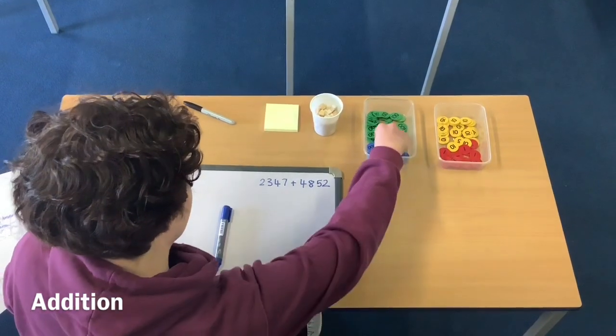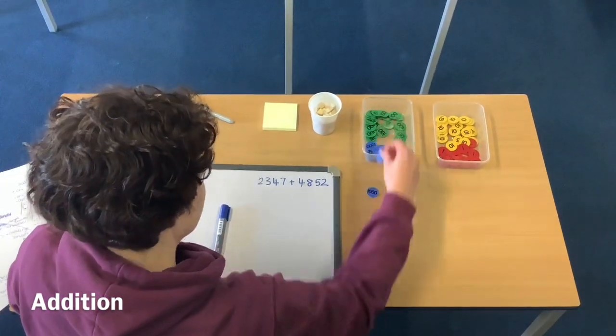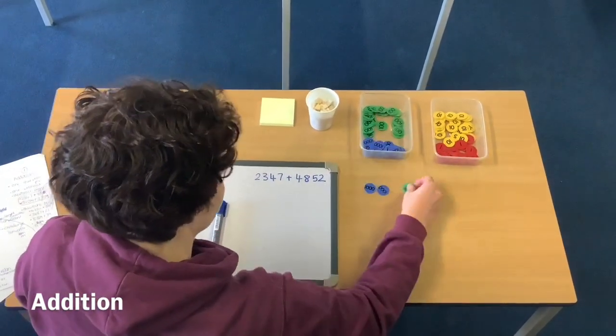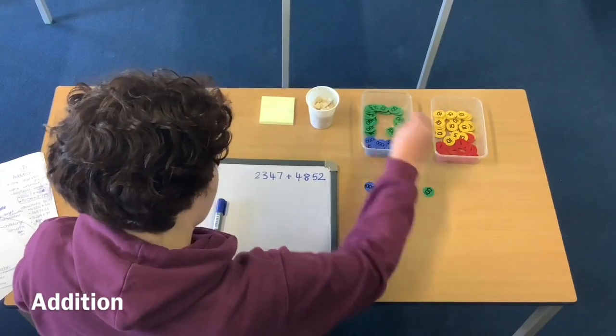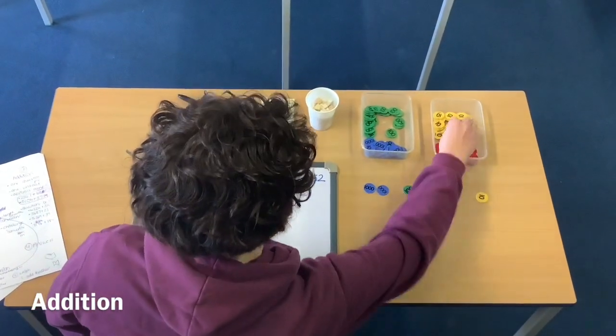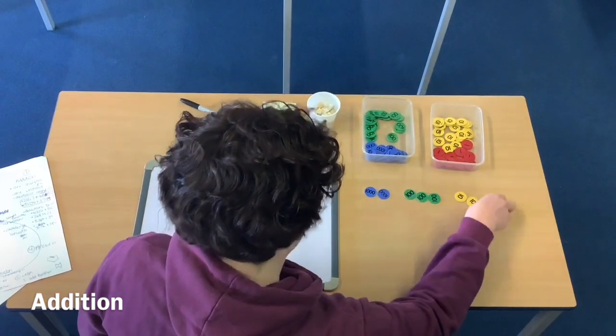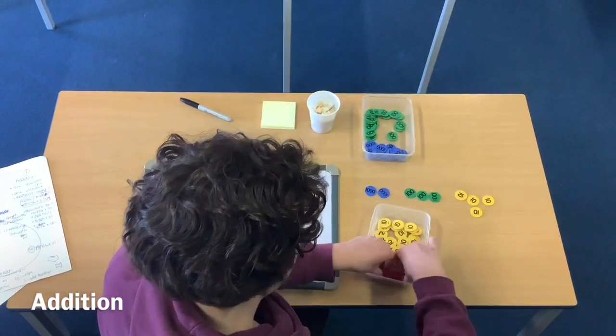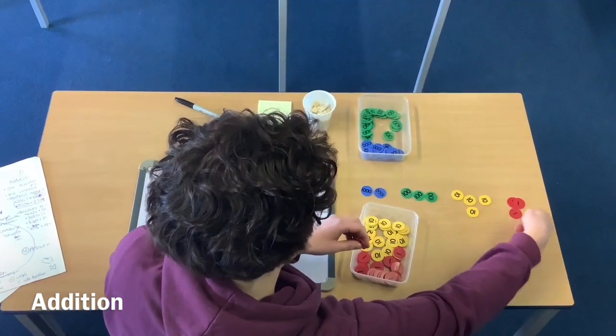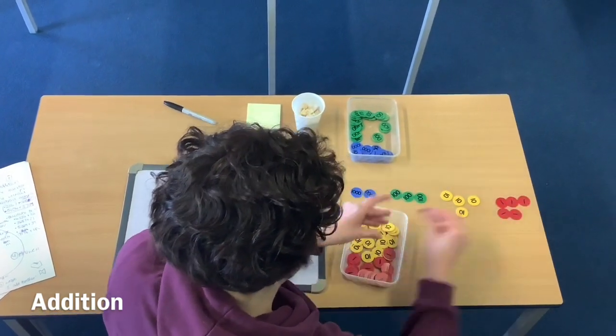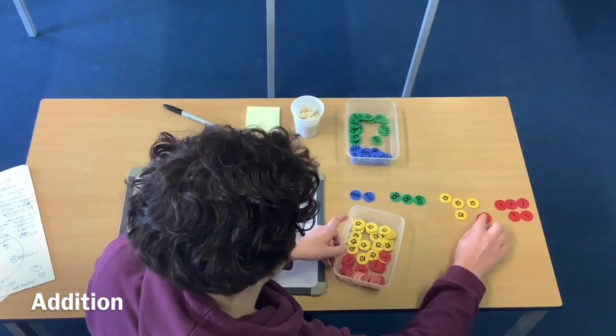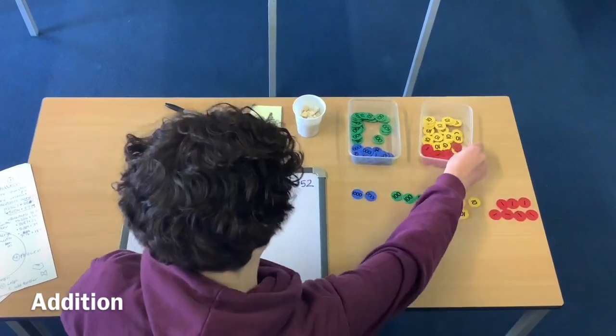First I'm going to make my first number. So I've got 2 thousands, 3 hundreds, 4 tens, and then 7 ones.